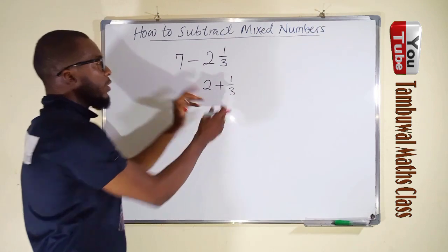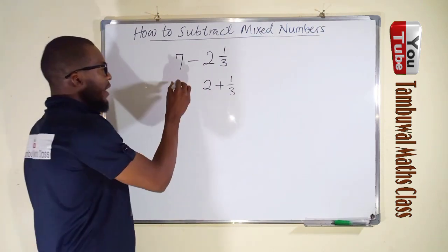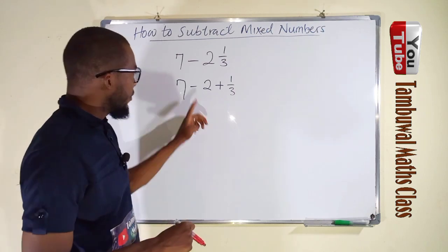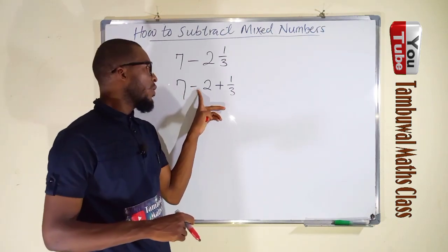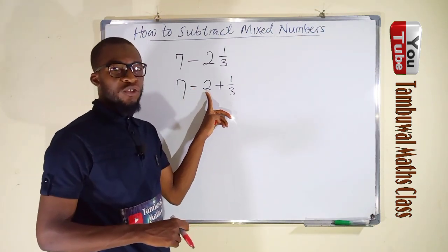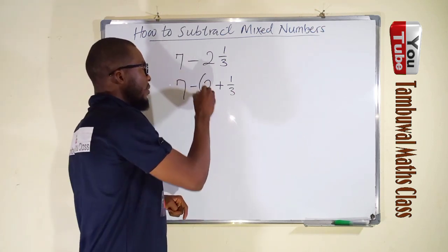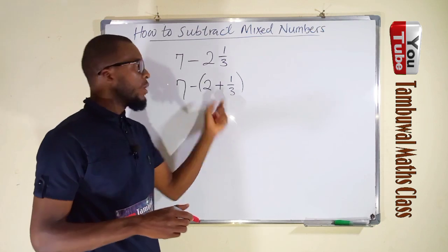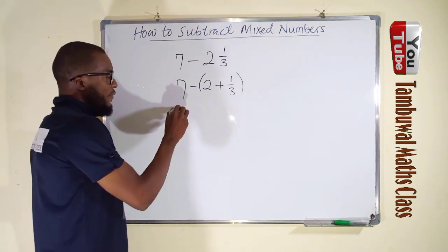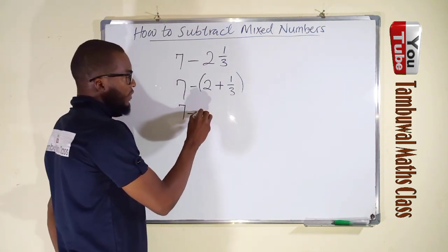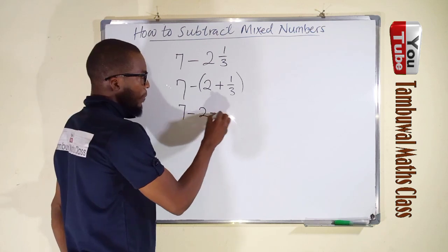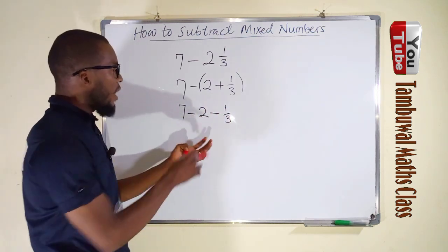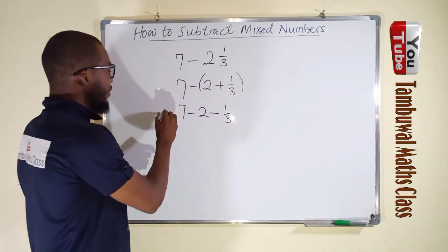We want to subtract the whole bundle from 7. Writing 7 minus 2 is wrong because the negative sign would only affect the 2. We must add parentheses to show we are subtracting the whole bundle: 7 minus (2 plus 1/3). When you expand this parenthesis, you obtain minus 2 minus 1/3, showing that we are subtracting the entire bundle from 7.